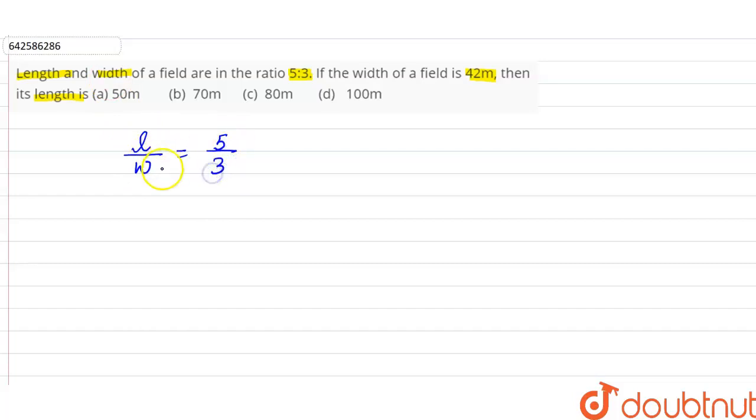Now let's say the length of the field is 5x and the width of the field is 3x. In the question, it is given that the width of the field is 42 meters.